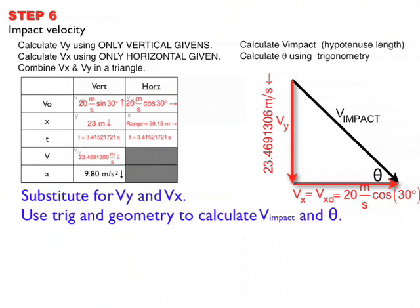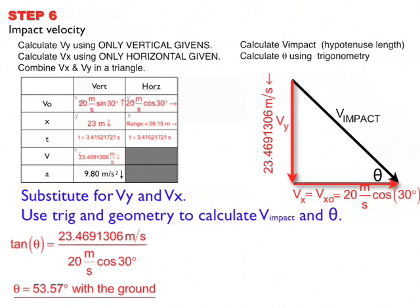So to find the angle in this case, I'm going to use tangent. Tangent theta is equal to opposite over adjacent. So tangent theta is equal to 23.469 divided by the quantity of 20 meters per second cosine 30 degrees. And when I do that, I get an angle of 53.57 degrees with the ground. So that's the direction, 53.57 degrees with the ground.